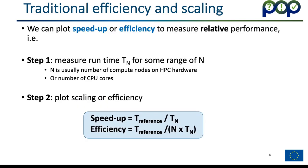We can use traditional performance metrics — relative speedup or efficiency — to try to understand performance issues. For these we measure the runtime for our executable for a range of n, where n is the number of cores or compute nodes, and then calculate the runtime scaling or efficiency relative to a reference case, typically one node or one core. Speedup is the reference time divided by the time on n cores or processes, and efficiency is the reference time divided by n times T_n, where T_n is the time on n cores.